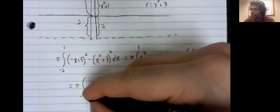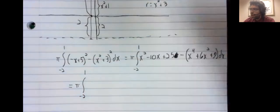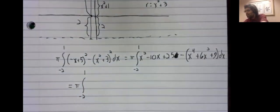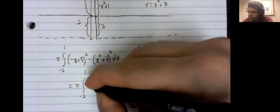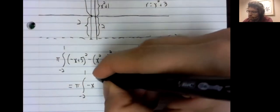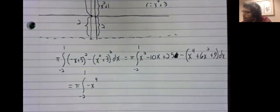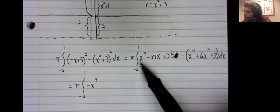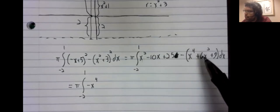And if we now combine any like terms, let's see. Negative x to the fourth, x squared minus six x squared.